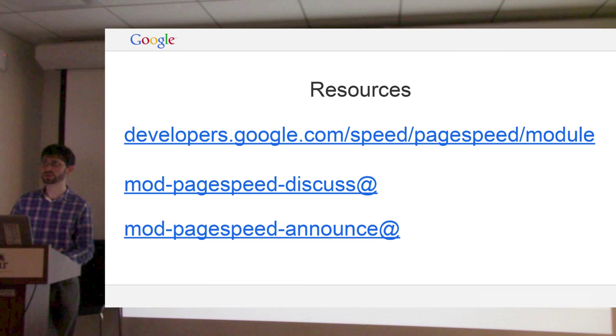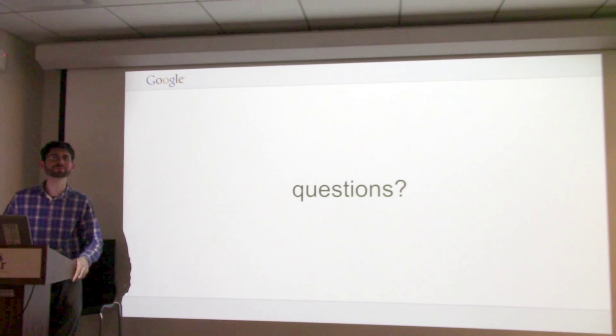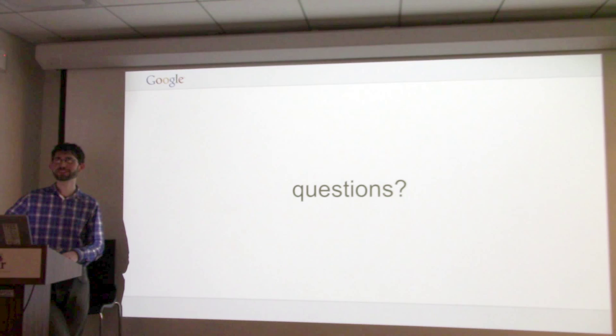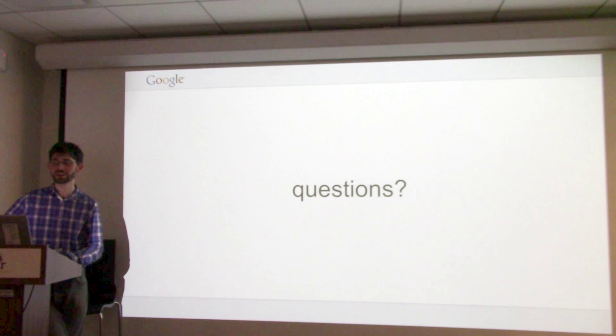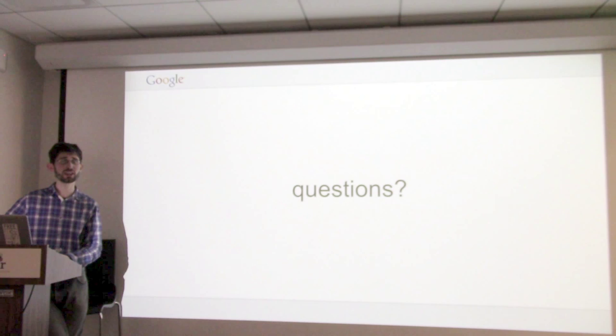Q&A. One question: how does the automatic PNG-to-JPEG conversion work? We have a heuristic developed by an image processing person on the team. I think it's something about looking for really straight lines, which appear almost never in real life but most of the time in graphics. I should probably ask him to write up a blog post on it because it's pretty cool.